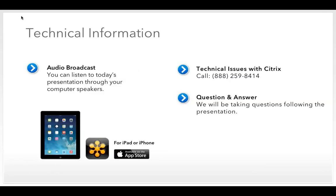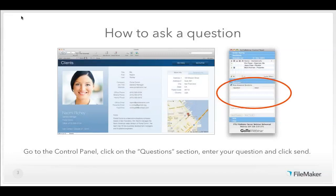For the best experience, it is strongly recommended that you participate with at least a broadband connection. If you have any problems or require online assistance, please contact Citrix Technical Support at 888-259-8414. Throughout today's presentation, you'll have the opportunity to type in and ask questions. Go to the Control Panel, click on the Questions section, enter your question, and click Send. We'll try to answer as many as time allows at the end.